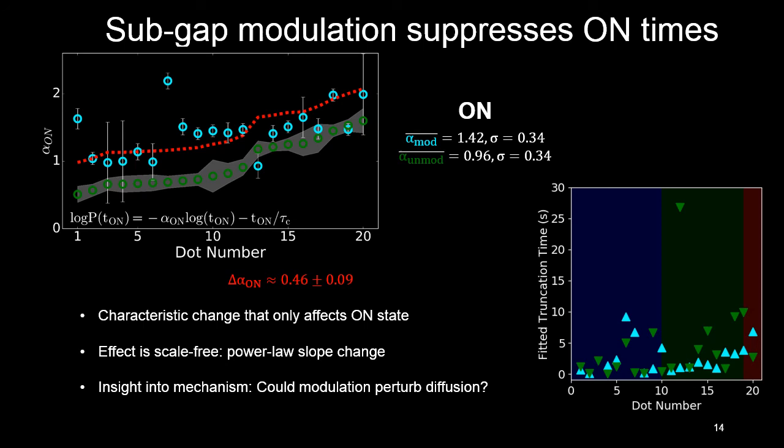In terms of a microscopic mechanistic origin, I'm really not sure, but we started thinking about the Marcus diffusion controlled model and whether the subband gap modulation can perhaps perturb the diffusion of the quantum dot energy levels, maybe change the slopes in this way. But this last point is very tentative and it's something we've just started thinking about.